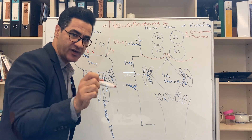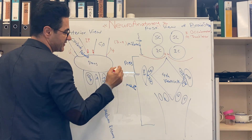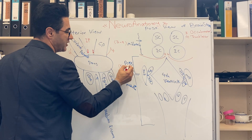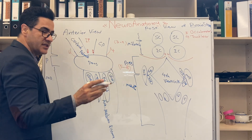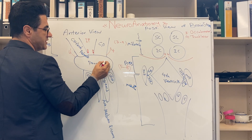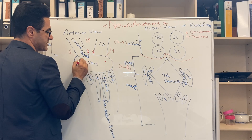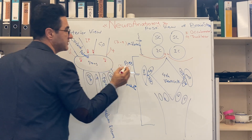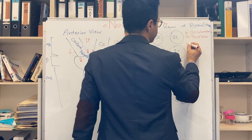Both cranial nerves 3 and 4 supply the muscles around the eyeball and control eye movement. Cranial nerve 5 is a chunky nerve coming out of the lateral side of the pons, and it is called the trigeminal nerve.